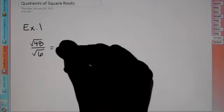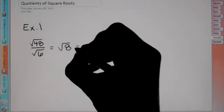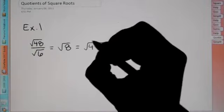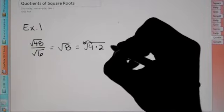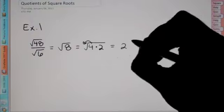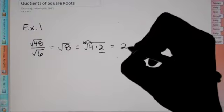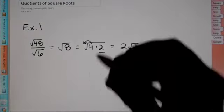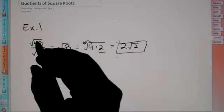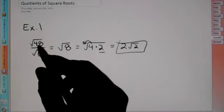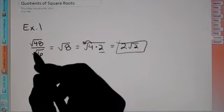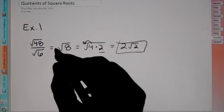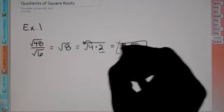48 divided by 6 gives us root 8. The root is still there, and now we can break down the square root of 8, which is 4 times 2. The square root of 4 comes out as 2, leaving us with 2 still underneath. So our final answer is 2√2. You can divide straight down if they both have a root, so 48 divided by 6 is 8, and then we break that down.